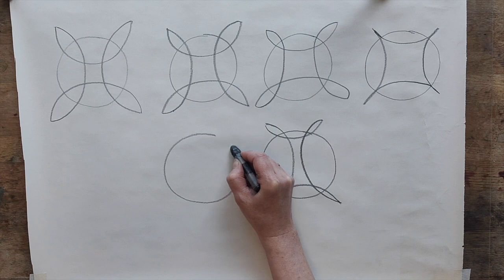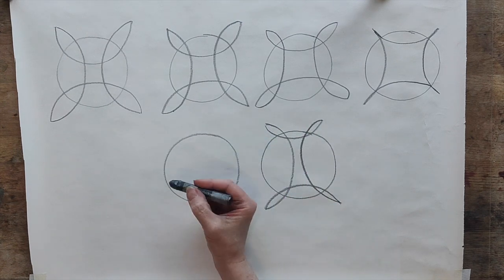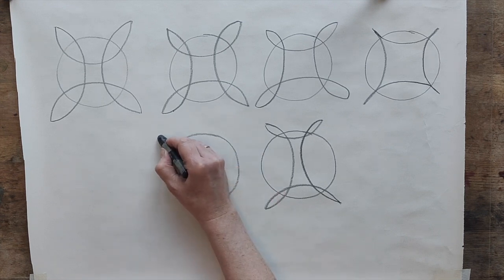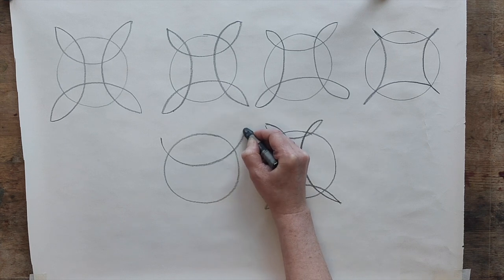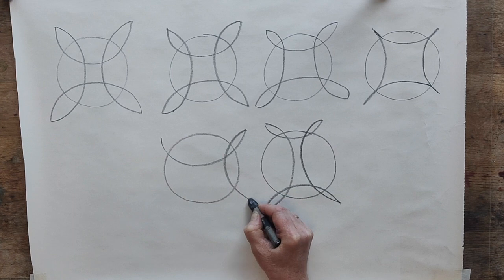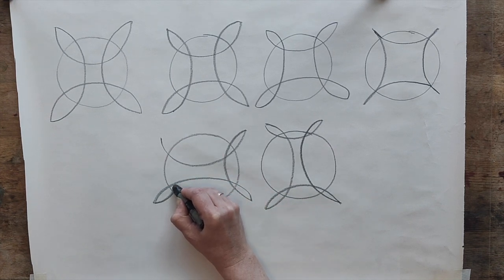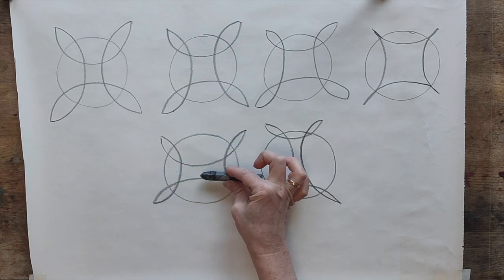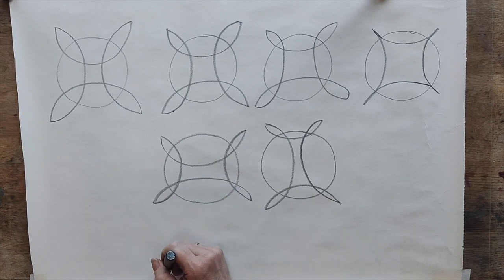And of course what you can do is you can draw a circle and then turn this round so we're now doing it horizontally. That then means that we have to come far in with our line at the top, not so far in at the side, far in at the bottom, and not so far in at the side. That then creates a long elongated horizontal shape.